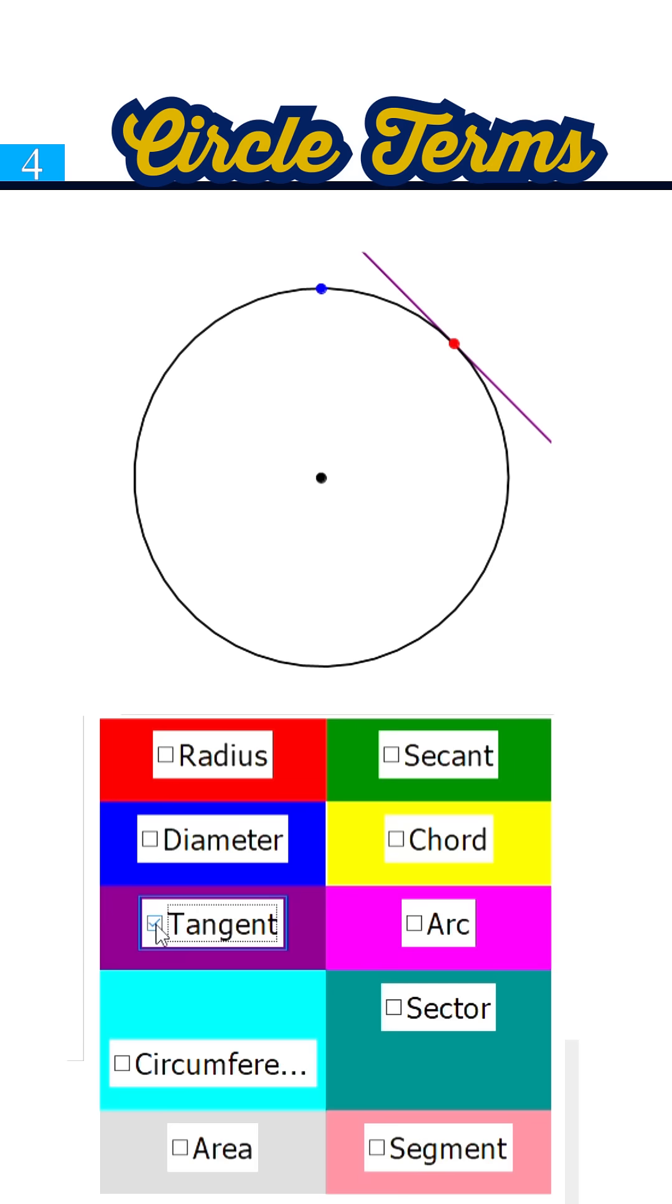Tangent, a line that touches the circle at exactly one single point. Circumference, the complete journey all the way around the circle. Area, the total space inside the circle's boundary.